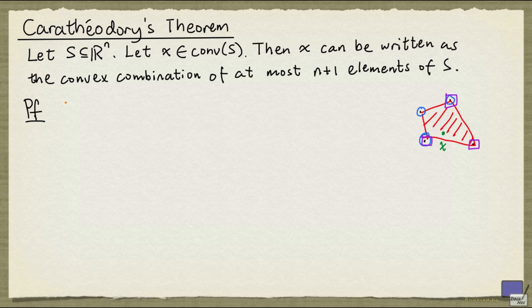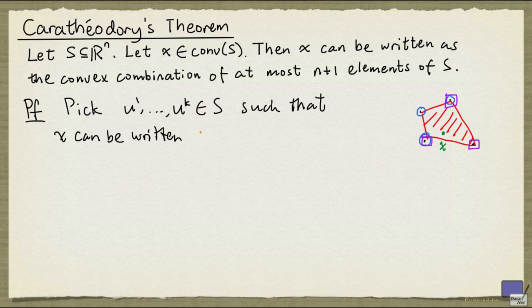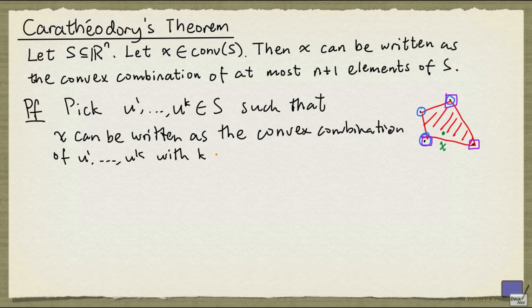So here is what we are going to do. We are going to pick u₁ up to uₖ from S such that x can be written as the convex combination of u₁ up to uₖ, with the requirement that k is as small as possible. So if k is at most n+1, we are done.